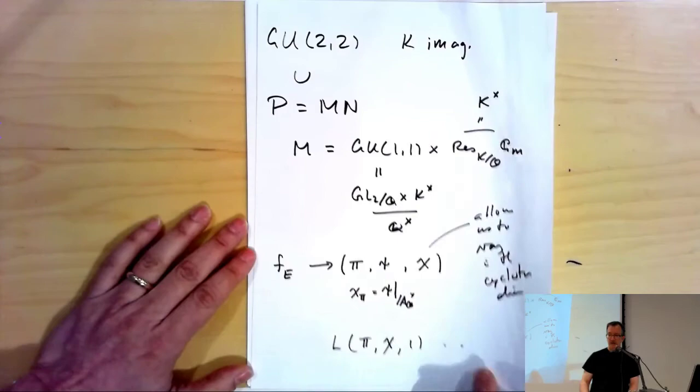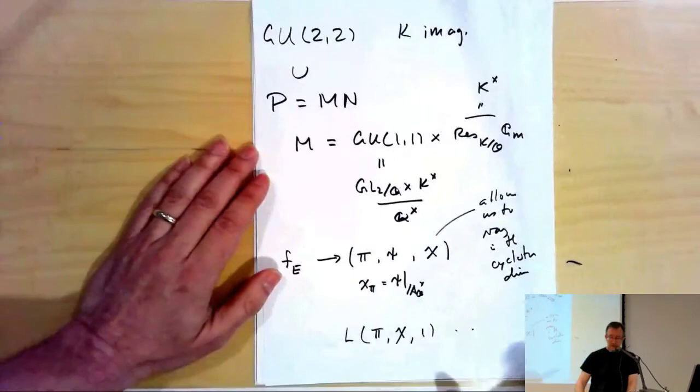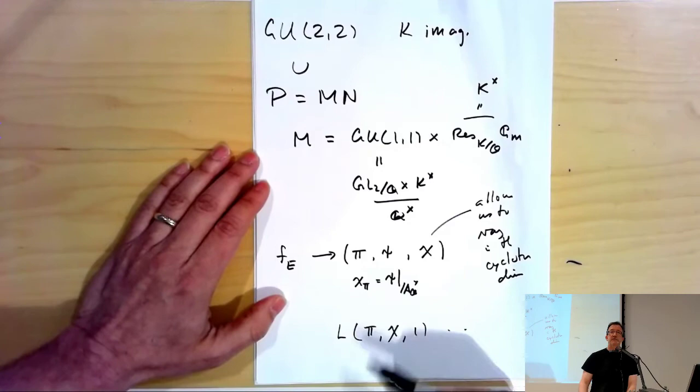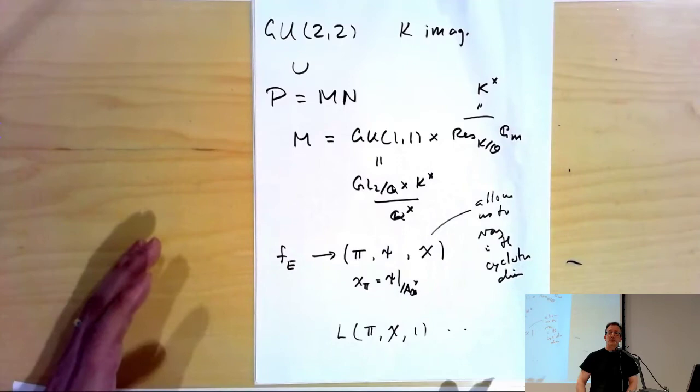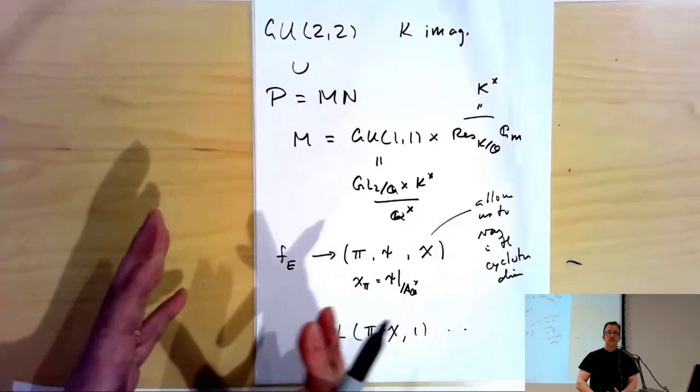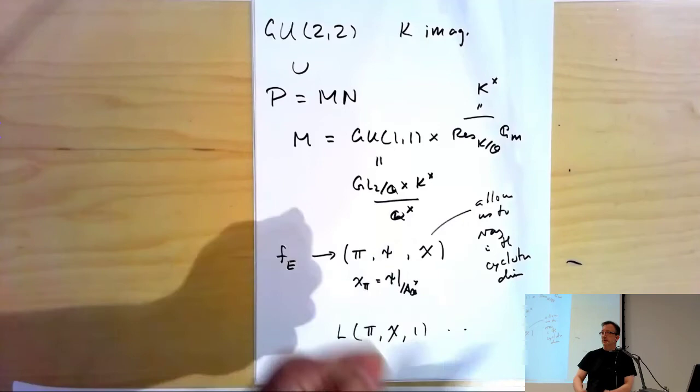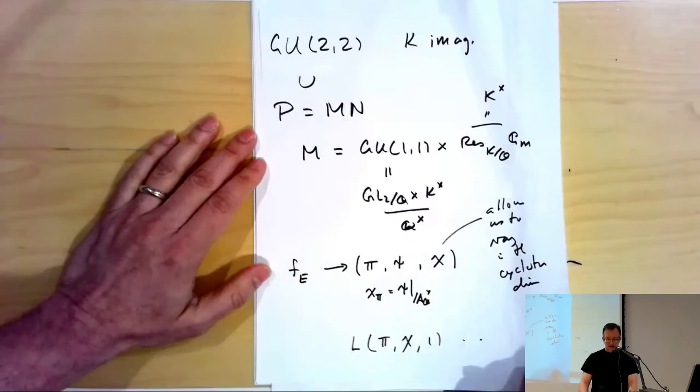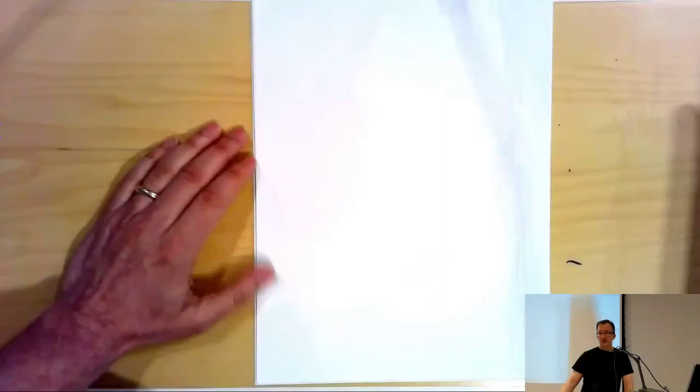Much as in Romyar's talk, you can also vary your modular forms into Hida families. So in fact you end up with a three-variable family of Eisenstein series: one variable for the modular form varying in weight, and two variables from the character χ varying over finite characters in the Z_p^2-extension of K. Then you end up proving a three-variable divisibility, and you get the one-variable divisibility I wrote down before by specializing.